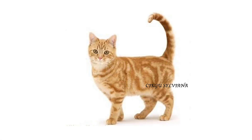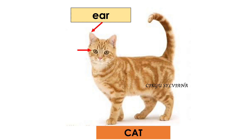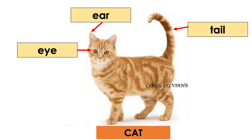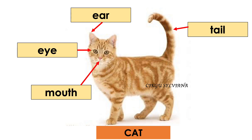Let's take an example of a cat. Cat has ear, eye, tail, mouth, and leg.